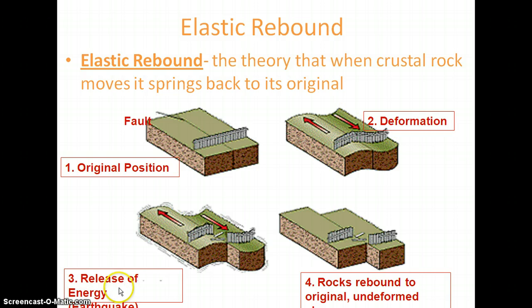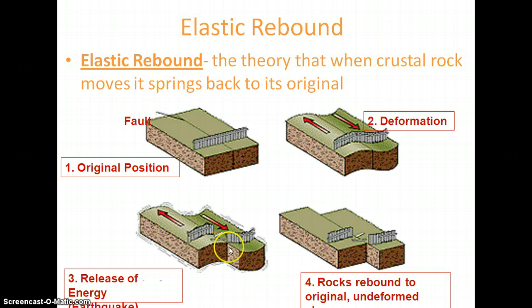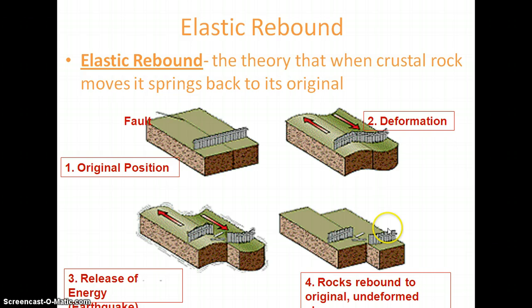The third figure shows the release of energy after earthquake occurs. Due to the faulty region it may slide, and this earthquake release of energy will cause movement of these rocks. Here the rocks rebound to their original undeformed position. The deformation takes place, and again the undeformed position comes back. This is called elastic rebound theory.